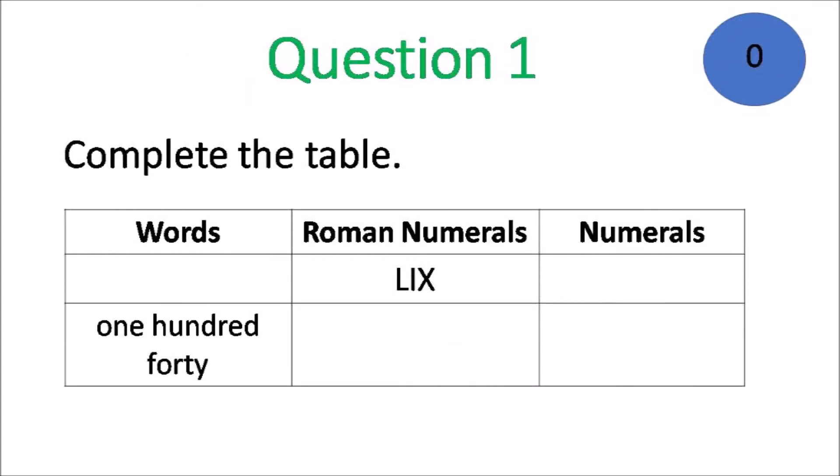Question 1. Complete the table. The table is made up of words, roman numerals, and numerals. So you have L-I-X. Change that roman numeral to a numeral and change it to words. 140, change to a roman numeral and change it to a numeral.